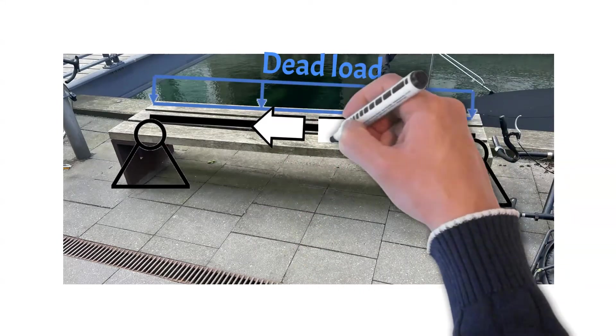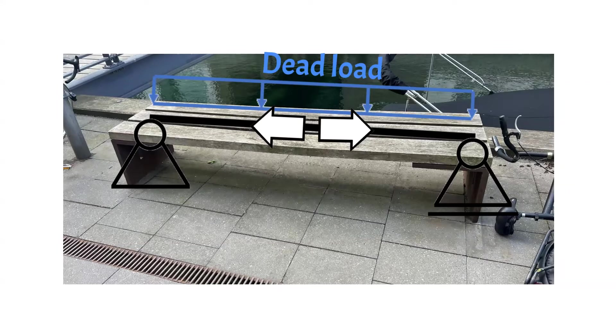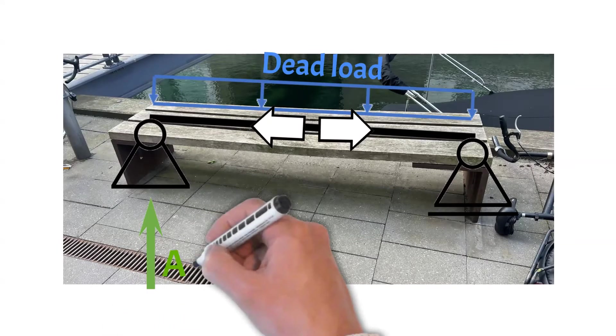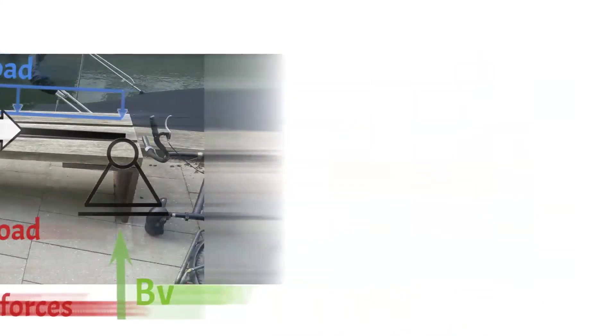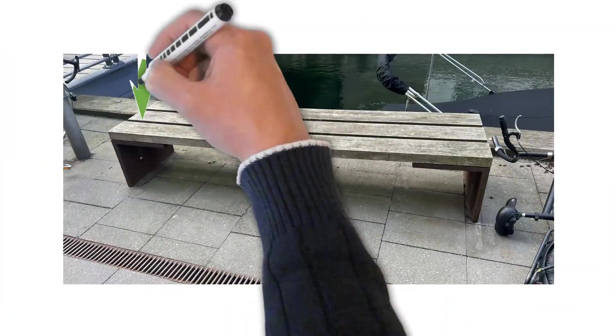Now those loads travel through the beam and to the supports. But the external forces, like the loads, equal the support forces. These external forces are then transferred to the next structure. In this case it would be the steel plate.